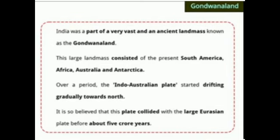India was a part of a very vast and ancient landmass known as Gondwanaland. This large landmass consisted of the present South America, Africa, Australia, and Antarctica. Over a period, the Indo-Australian plate started drifting gradually towards the north, and it is believed that this plate collided with the large Eurasian plate about 5 crore years ago.